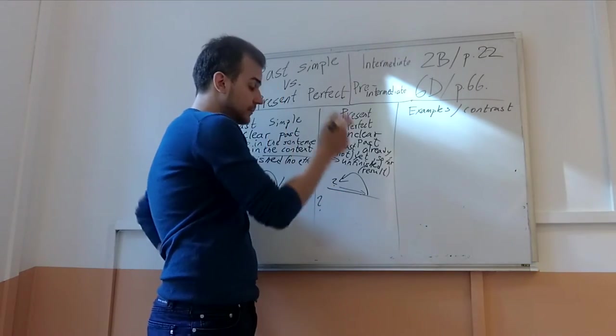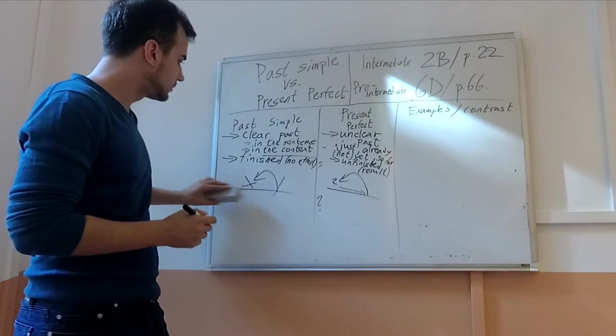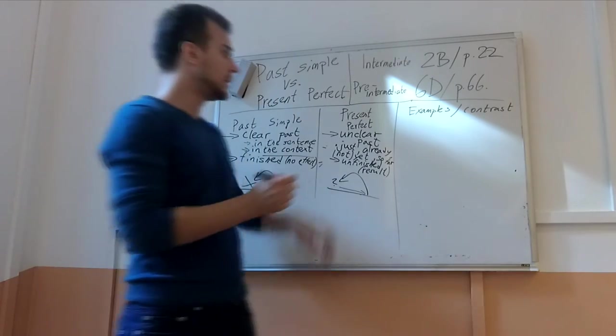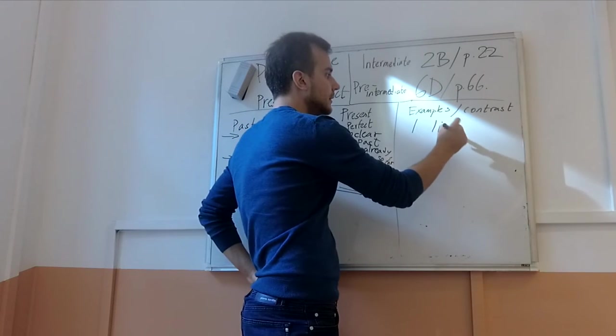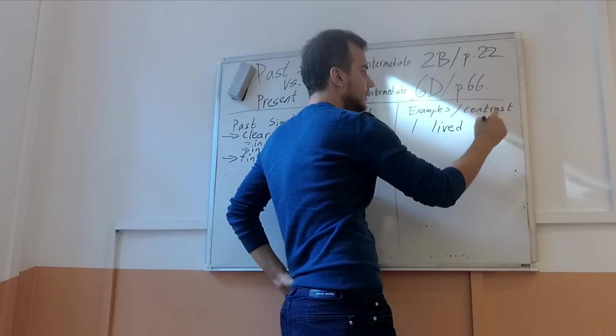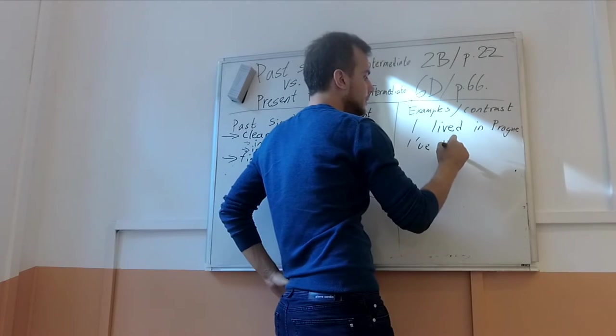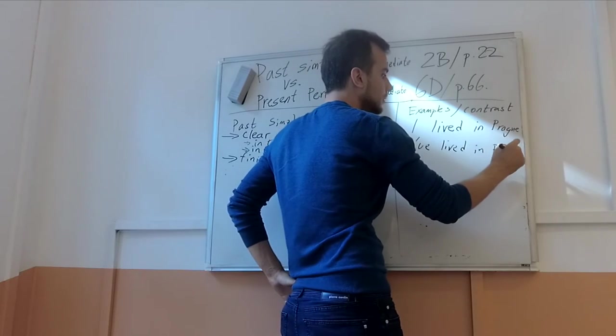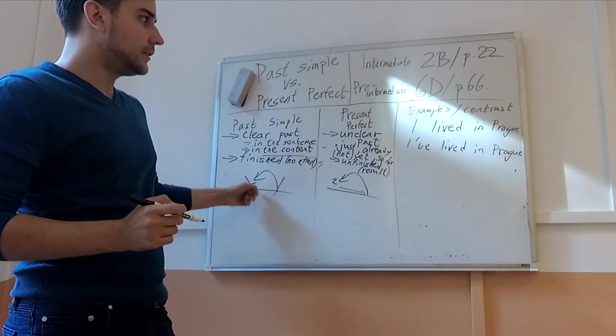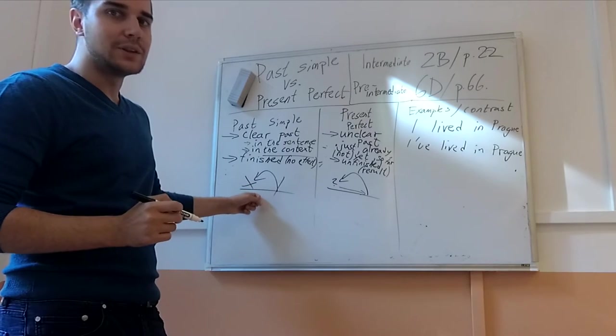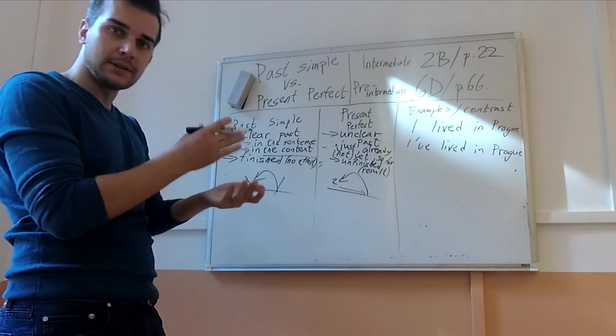So for example, let's look at the example sentences for this one. I will discuss the form a little bit later. Now, if we talk about the past, then I say I lived in Prague. So here, if I use the past, that means I don't live there now. It is finished. And I know that it happened in some past.